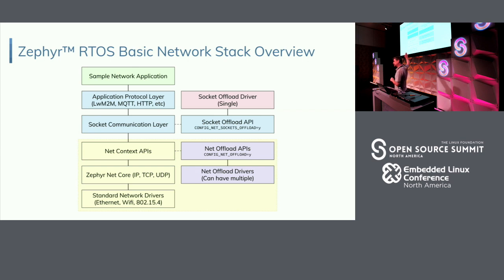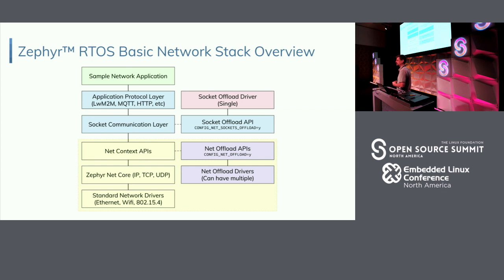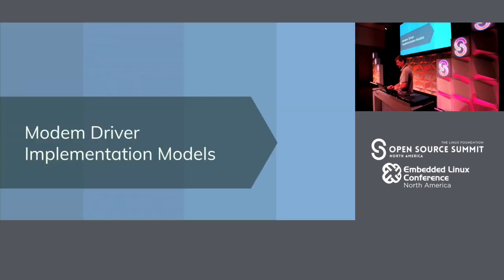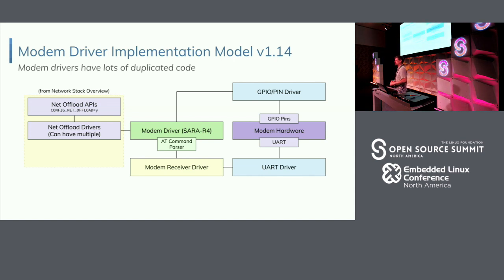I highlighted two options on the right — these are called offloaded APIs. What you're seeing a lot lately is that on the NCP, whether it's a Wi-Fi or AT-based modem, they do that stack for you. You don't want to let that stuff go down into the lower layer because you're just handing it off to the modem. There are two methods of offloading: a socket-based offload API at the top, and a net-offload API at the bottom. We'll cover those once we compare the original implementation versus the new one.